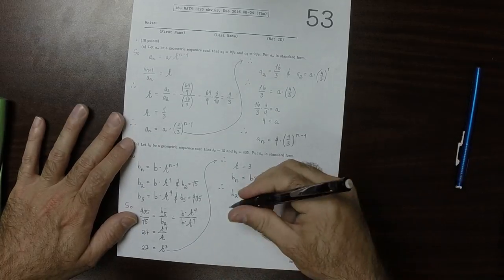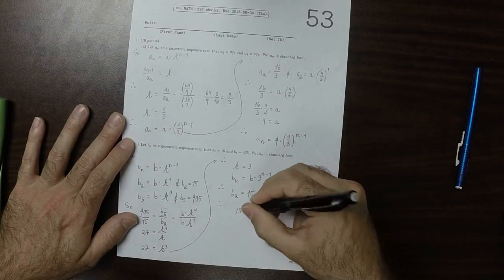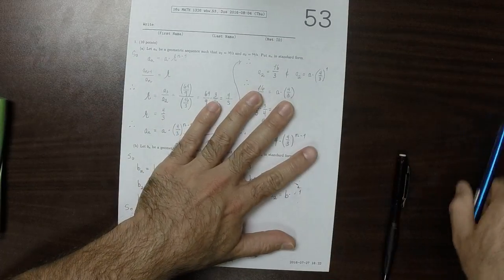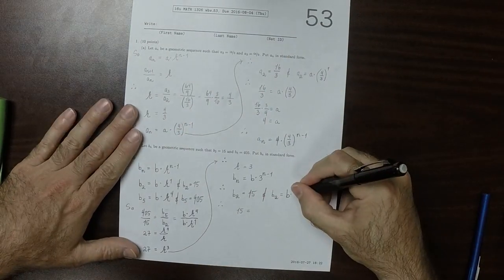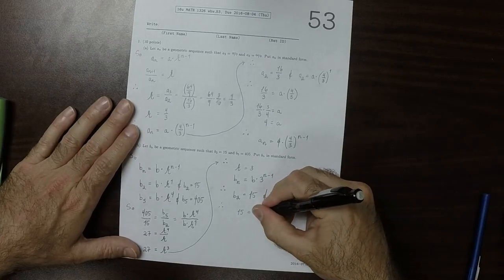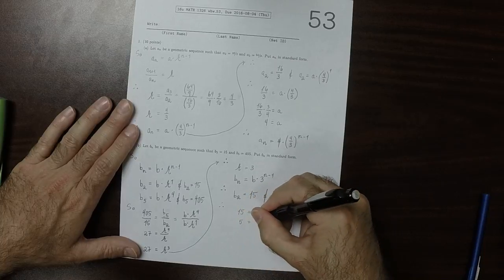So taking these two, we have 15. And furthermore, we know what the r is. The r is 3. So we know that 15 is b multiplied by 3, so that b is 5.